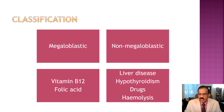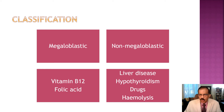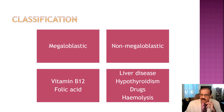Hemolysis is another cause. I normally classify hemolysis as normochromic normocytic anemia, but when cells are destroyed, new cells are formed and newer RBCs are slightly bigger in size. So the overall picture may be that of macrocytic anemia — they are not exactly ovalocytes but they are slightly bigger, so MCV (mean corpuscular volume) will be more than normal. They may be classified as macrocytic anemias also. So this is the basic classification.